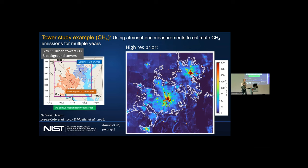My colleague Anna Karion is using atmospheric measurements to estimate methane emissions for multiple years. She's using six to 11 urban towers. You can see them as pluses on the screen. Here she's delineated by color Baltimore and Washington D.C. Baltimore is in blue, Washington D.C. is in orange. There's no value judgment to those colors. Those are defined by the U.S. Census. On the right-hand side, she decided the best way is to come up with a high resolution prior, just like Joe did.